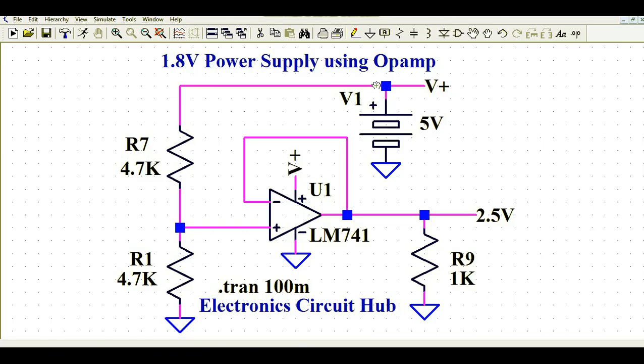Now with the same positive supply, whatever I'm feeding to the operational amplifier VCC pin, the same pin I am connecting to a resistor divider. The voltage at this node, at the divider node, I am feeding to the plus terminal of the op amp, the non-inverting terminal. Since R7 and R1 both have the same value, both are equal.